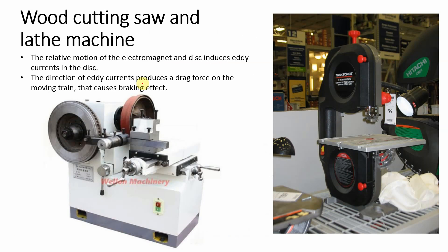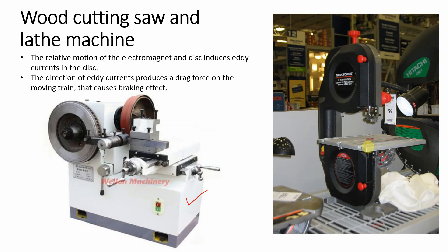Wood cutting saw اور lathe machine میں بھی magnetic brake use ہوتی ہے۔ Lathe machine کو اچانک روکنا ہو تو ایک magnetic brake لگائیں گے۔ Wood cutting saw کا blade بہت تیزی سے گھوم رہا ہوتا ہے اور اس کو اچانک روکنے کے لیے magnetic brake کا وہی principle ہے — ایک electromagnet چاہیے اور ایک disc چاہیے۔ جب brake لگانی ہو تو electromagnet کو active کر دیں — disc کے اندر eddy current produce ہوگا جو breaking effect produce کرے گا۔